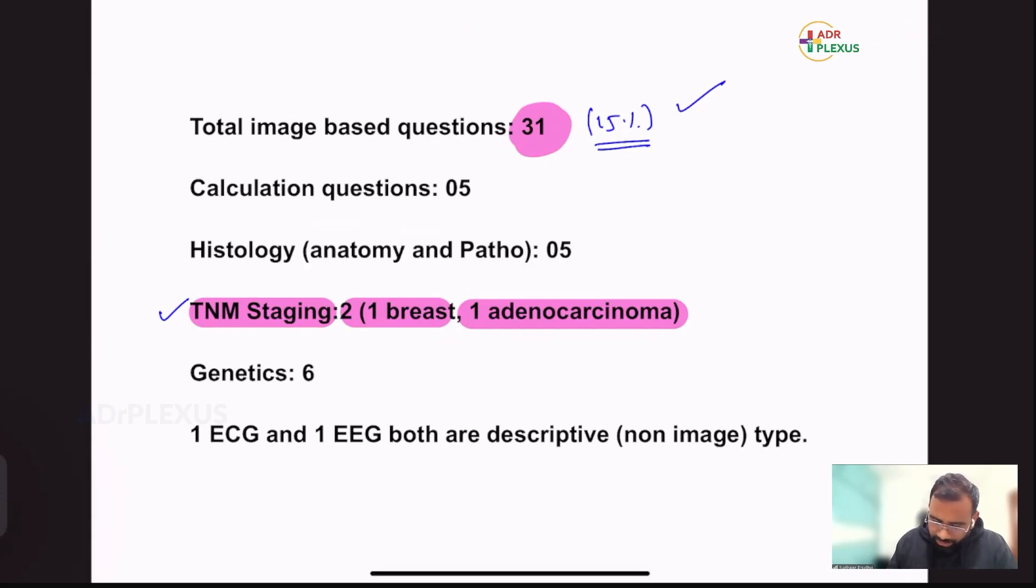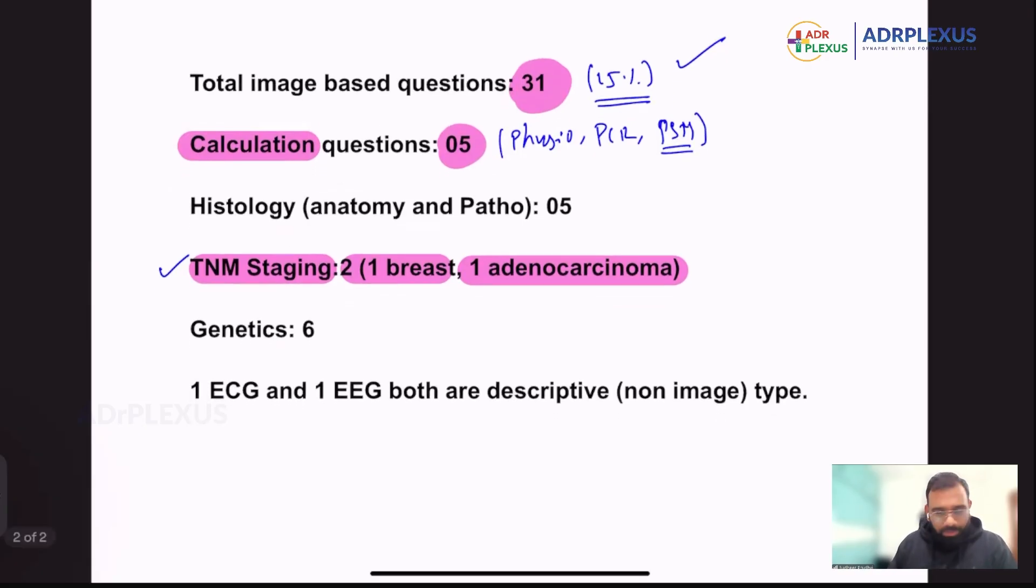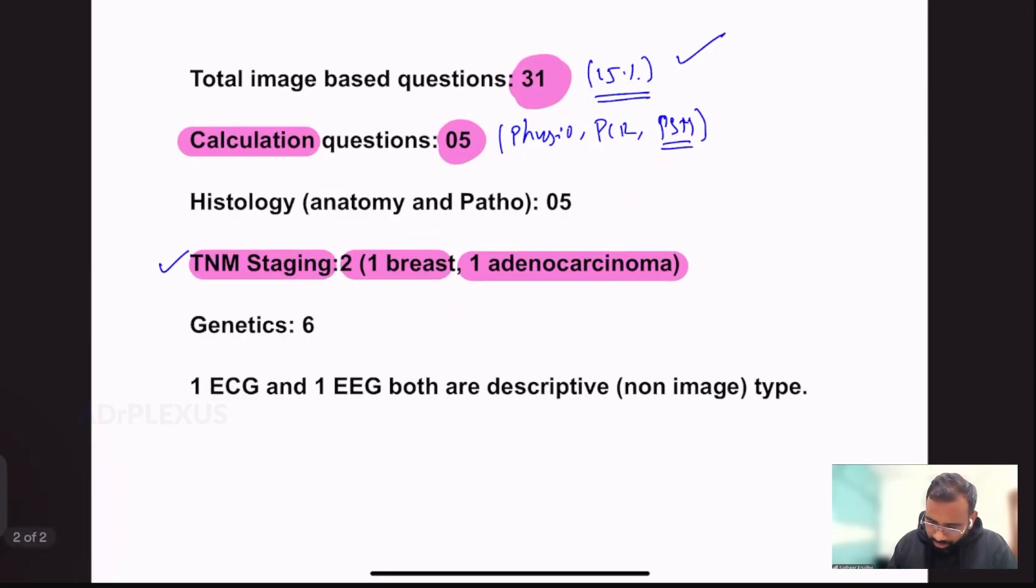And again, calculations questions like a problematic one, there are around five. In those five, I could see one from physiology, and then one question we got from PCR, I think so number of cycles in PCR something it is there. So PCR, and then surgery, like PSM part. So I think these are the things they have given in calculations, as I can remember.